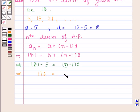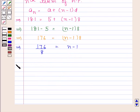So we have 176 equals (N minus 1) into 8, and this implies 176 divided by 8 is equal to N minus 1, and this implies 22 is equal to N minus 1, and this implies N is equal to 23.